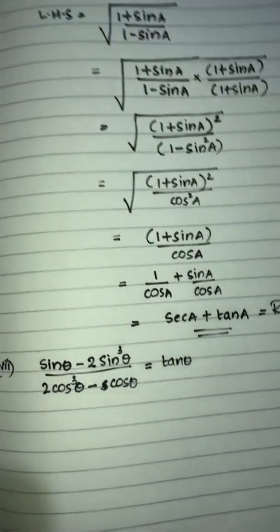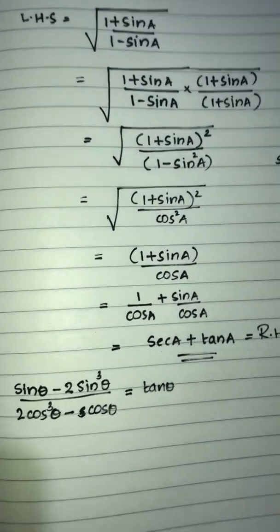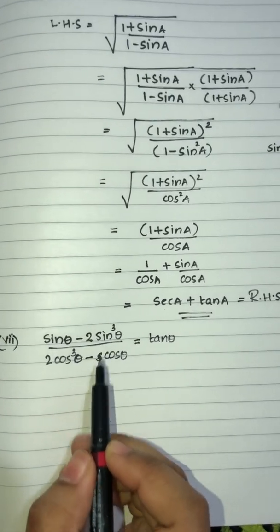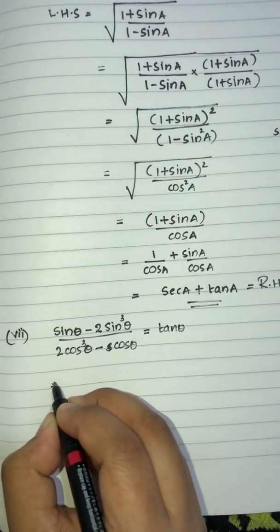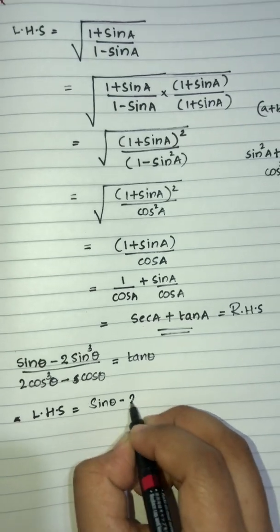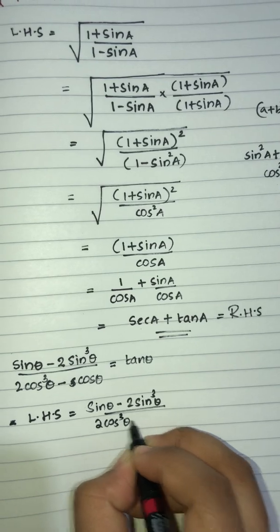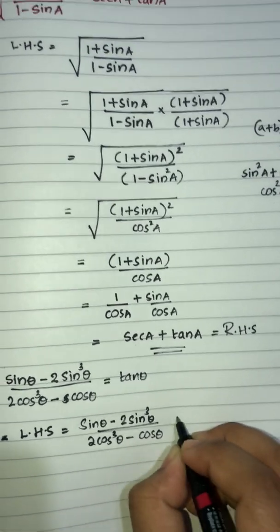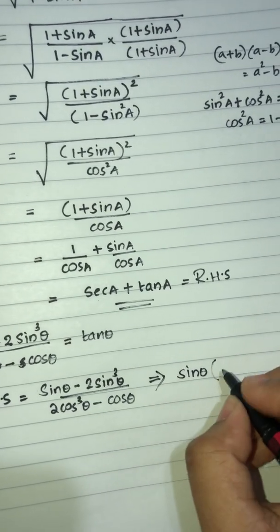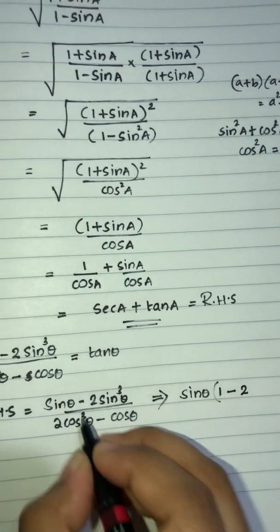Now let's solve the 8th question. We take sin theta common from the numerator: sin theta times (1 minus 2 sin squared theta). From the denominator we take cos theta common.